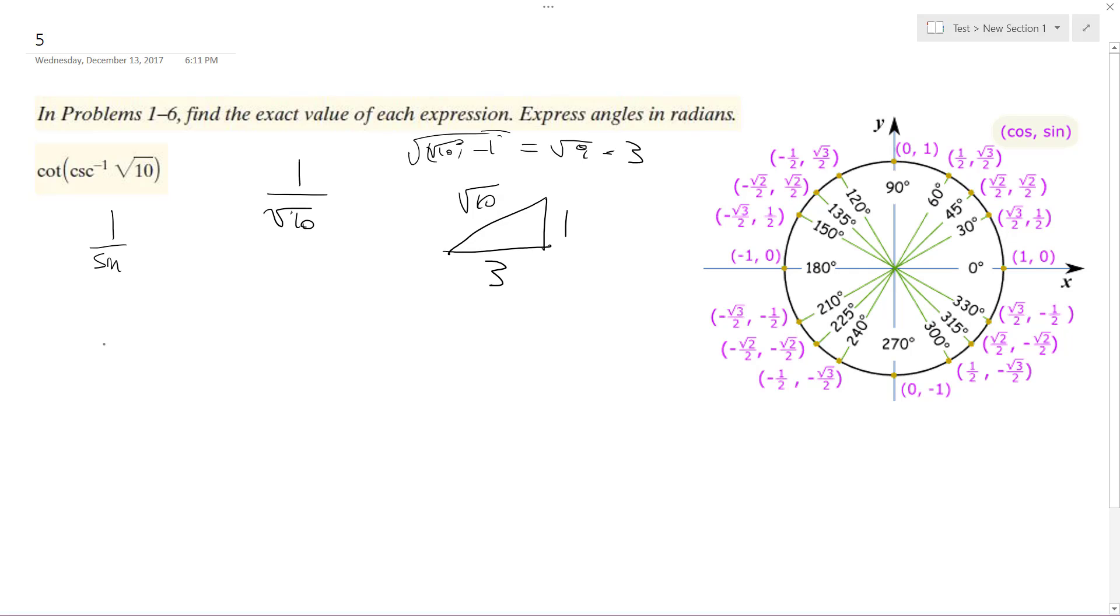So now we have the cotangent. Cotangent is equal to the cosine over the sine, or essentially just x over y, which is equal to, in this case, the x component is equal to 3.